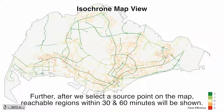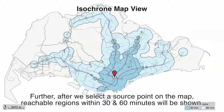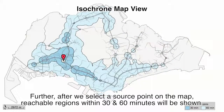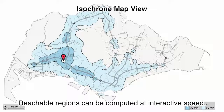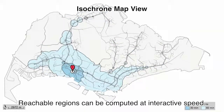Further, after we select a source point on the map, reachable regions within 30 and 60 minutes will be shown. Reachable regions can be computed at interactive speed.